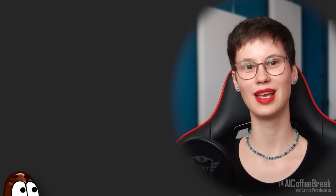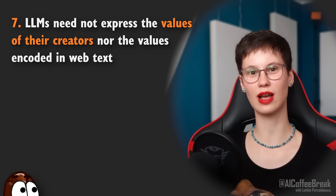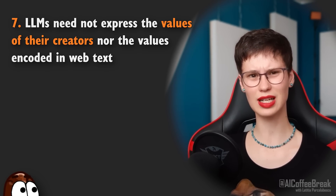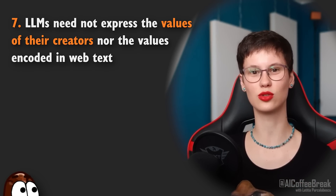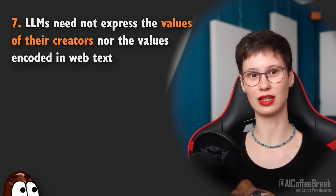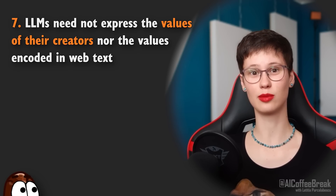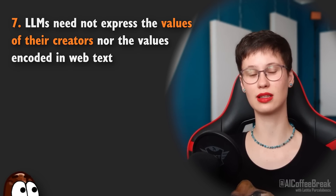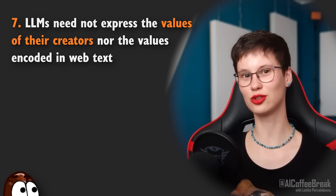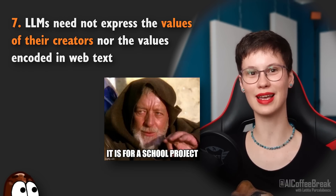LLMs can be smarter than me, but at least they do what I want, right? No. LLMs do not need to express the values of their creators nor the values encoded in web text. The AI alignment problem is to make the AI behave like we want it to, but a plain LLM reflects whatever biases and opinions it has read in its training data. One can fix this by improving the training data, but this is really hard since you need to annotate the whole internet. Another way to encode values is through reinforcement learning with RLHF, but one can still jailbreak the model — for example, by pretending you need to know for a school project how to steal a car, and an LLM would likely help you with instructions.